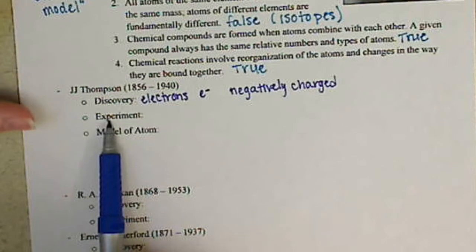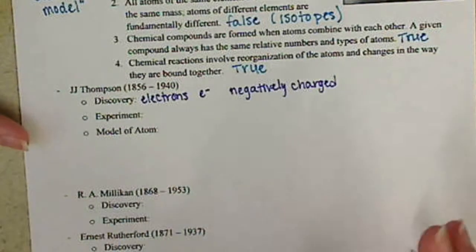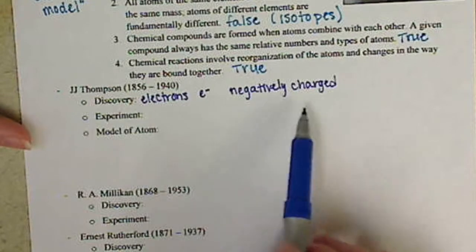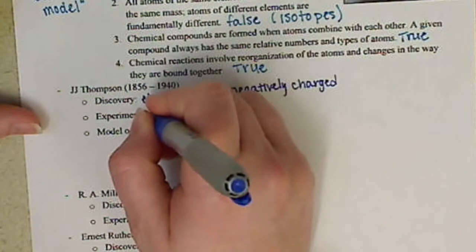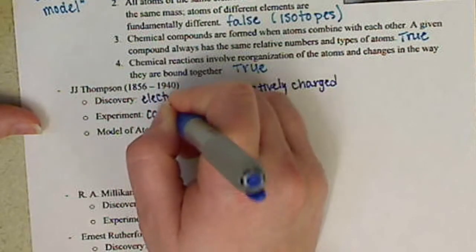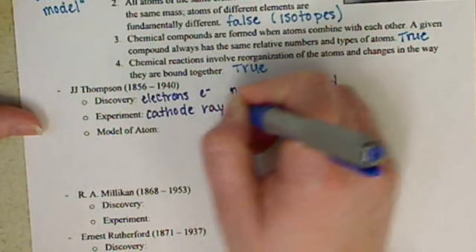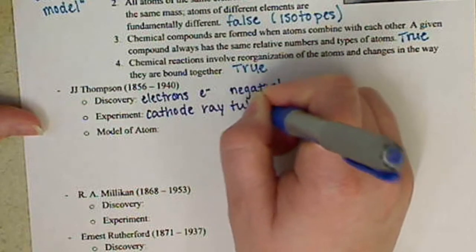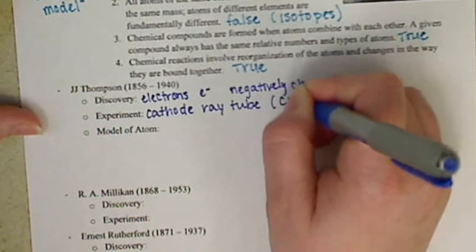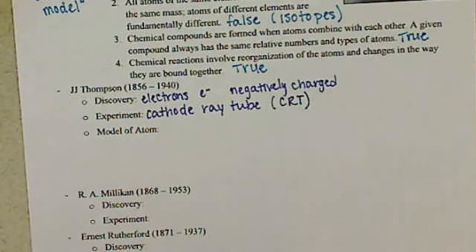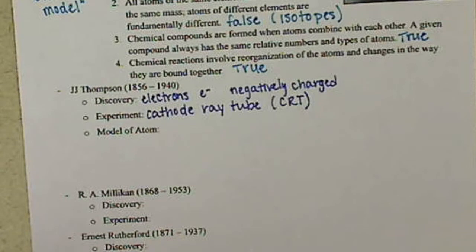And that's because he also determined that electrons are negatively charged. For his experiment, how he determined the existence of electrons and that they're negatively charged, he used what's called a cathode ray tube, also a CRT.